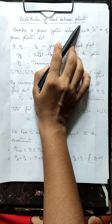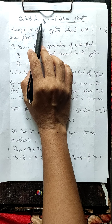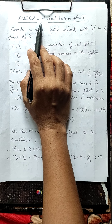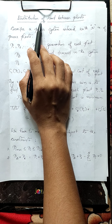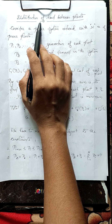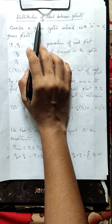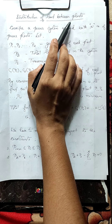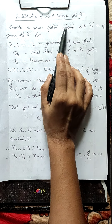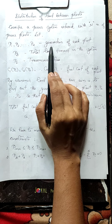We have studied how loads can be economically distributed between different units within a power plant. Now we have to study how the total load in a power system network can be economically distributed between different power plants. Consider a power system network with N number of power plants, and let P1, P2, etc., PN be the power output of each plant.